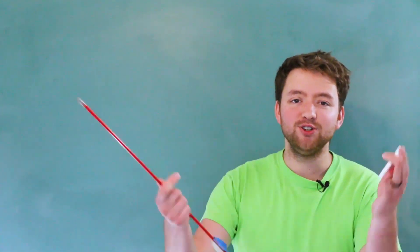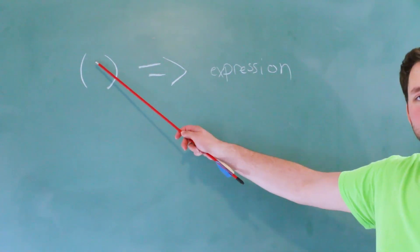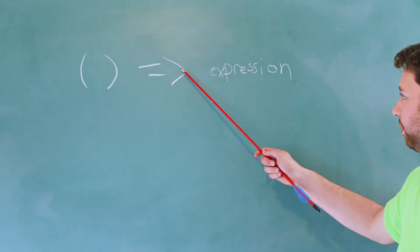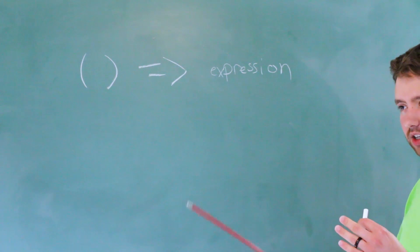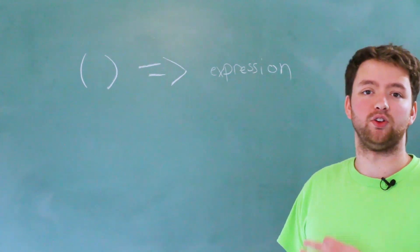All right, so what in the world is an arrow function? It's basically a new way to create a function and it looks a little something like this. So here we have opening and closing parentheses, and then we have an equal sign and a greater-than sign, and then an expression.